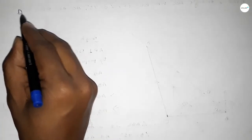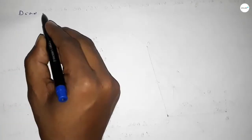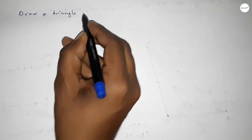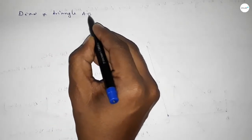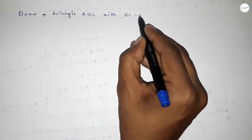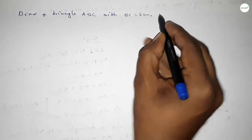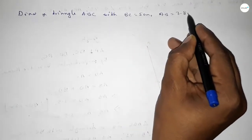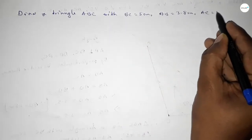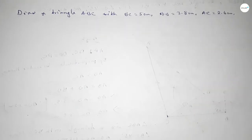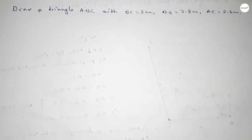Hi everyone, welcome to SI Share Classes. Today in this video we have to draw a triangle ABC with BC equal to 5 centimeter, AB equal to 3.8 centimeter, and AC equal to 3.6 centimeter. So let's start the video.